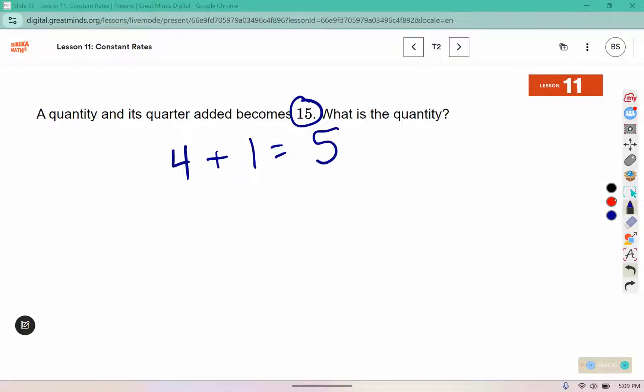Which isn't 15, but it's a way that we could start to approach this problem. Sometimes a wrong answer is just as helpful in solving for the correct answer. So I notice that 5 is a third of the way to 15, right, 5, 10, 15. So I'm going to triple the number 4 and see if that works. 4 times 3 is 12, so that is the quantity, and its quarter, a quarter of 12 is 3, which adds up to 15. So the quantity is 12.